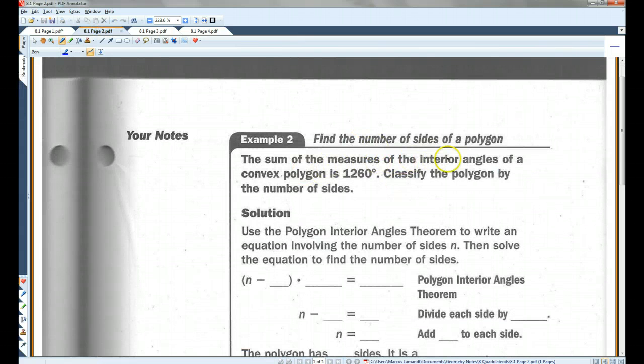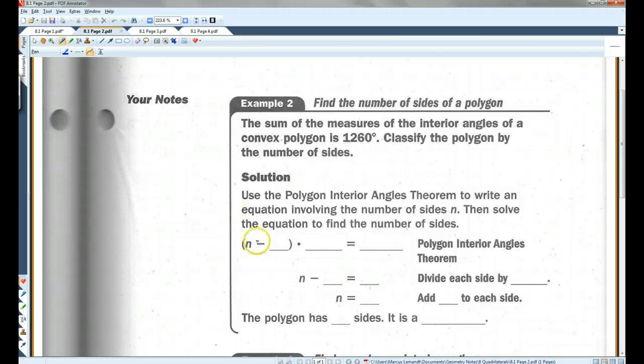Okay, the sum of the measures of the interior angles of a convex polygon is 1260 degrees. Classify the polygon by the number of sides. All right, so now we have to work backwards. Use the polygon interior angle theorem to write an equation involving the number of sides n, then solve the equation to find the number of sides. So we know our equation is n minus 2 times 180. But in this case, we don't know what n is. We need to solve for n. But we know that whatever n equals, we're going to end up with 1260 degrees. I'm going to divide both sides by 180. So if you divide this side by 180, this side by 180, you get n minus 2 equals, let's pull out the calculator.